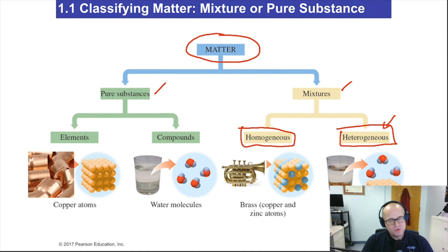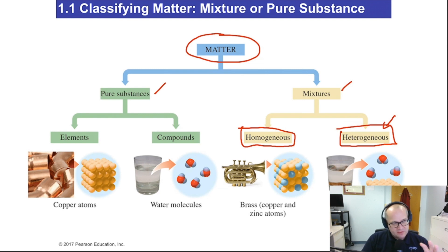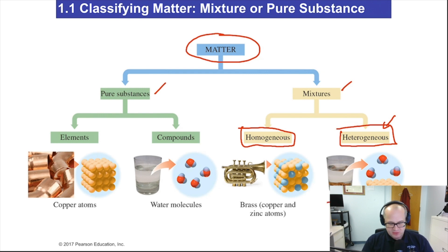Heterogeneous is a lot different — you can see differences throughout the mixture. A great example is chicken noodle soup or a chocolate chip cookie. If you look at a chocolate chip cookie, over here you'll find some dough, over there you'll find a chocolate chip, down here a little burnt crust. Heterogeneous — it's different depending on where you're looking. Coins in water is another example: up here you see water, down here you're touching coins. It's different no matter where you look.